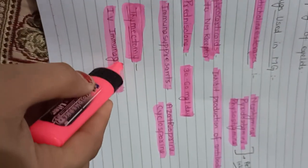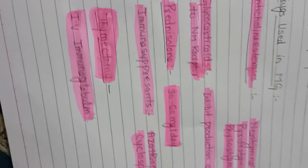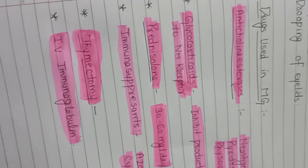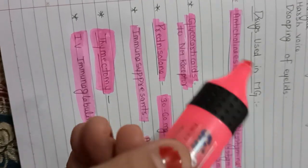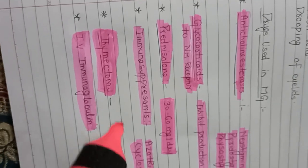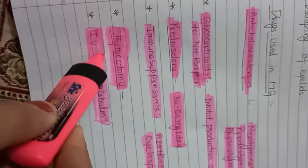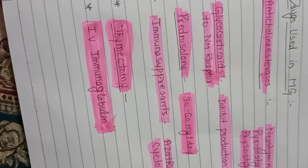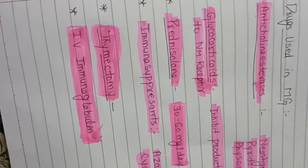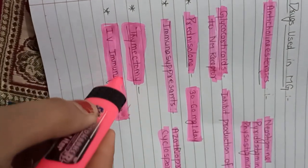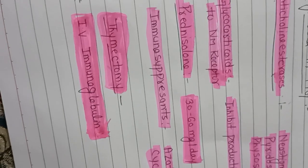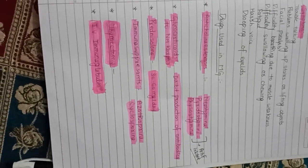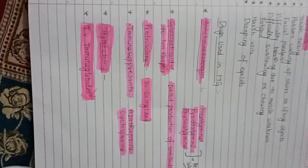Next is IV immunoglobulins — immunoglobulins are given by the intravenous route. This therapy provides the body with normal antibodies. In myasthenia gravis, because it is an autoimmune disorder, abnormal antibodies were being produced. IV immunoglobulins help generate normal antibodies instead. This therapy alters the immune system response and is used for more severe cases of myasthenia gravis, so that normal antibody production can occur.